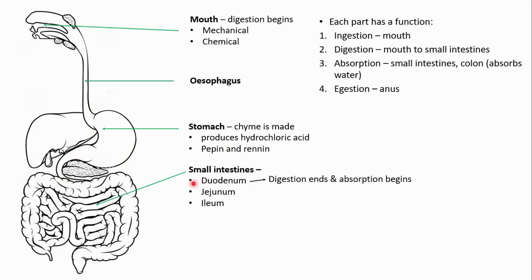And the small intestines, it's broken down into three parts. We have the duodenum, the jejunum, and the ileum. The duodenum is that upper portion or the first part of the small intestines and we have digestion ending here and the beginning of absorption.